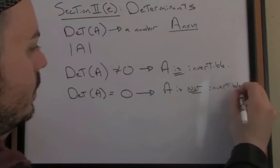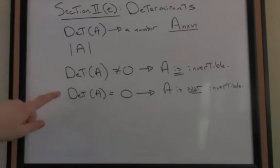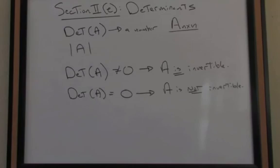This idea of invertible and not invertible has important consequences when solving systems of linear equations. It determines whether the solution is unique or whether there's even a solution to begin with. So, the determinant determines whether a matrix is invertible. If the determinant is not zero, the matrix is invertible. If the determinant is zero, the matrix is not invertible.